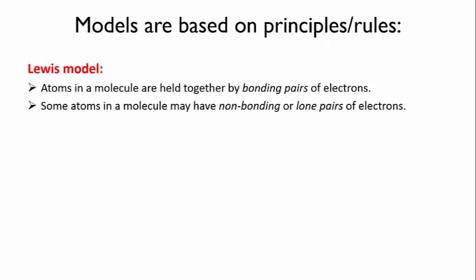All models are based on principles or rules that govern how the model works. The basic ideas behind the Lewis model are that atoms in a molecule are held together by shared pairs of electrons, called bonding pairs, that are located between the two atoms being bonded, and that the remaining valence electrons may be distributed as non-bonding pairs or lone pairs.